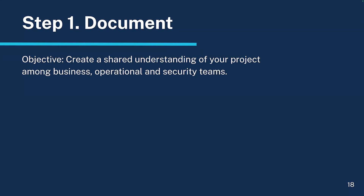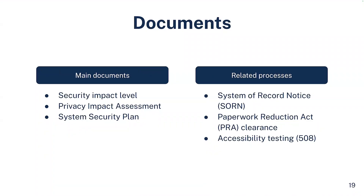Step one: Document. The objective is to create a shared understanding of your project among business, operational, and security teams. For ATO documentation, you will need a security impact level assessment to think about and document what kinds of risks are inherent in your system. You'll need a privacy impact assessment to address the privacy implications of your system — questions about the data you're retaining and your record requirements. You'll also need a very large document called a system security plan, or system security and privacy plan, and there are additional requirements to ship software outside the ATO process. When beginning an ATO, ask about all these requirements early so you can do documentation and testing together.